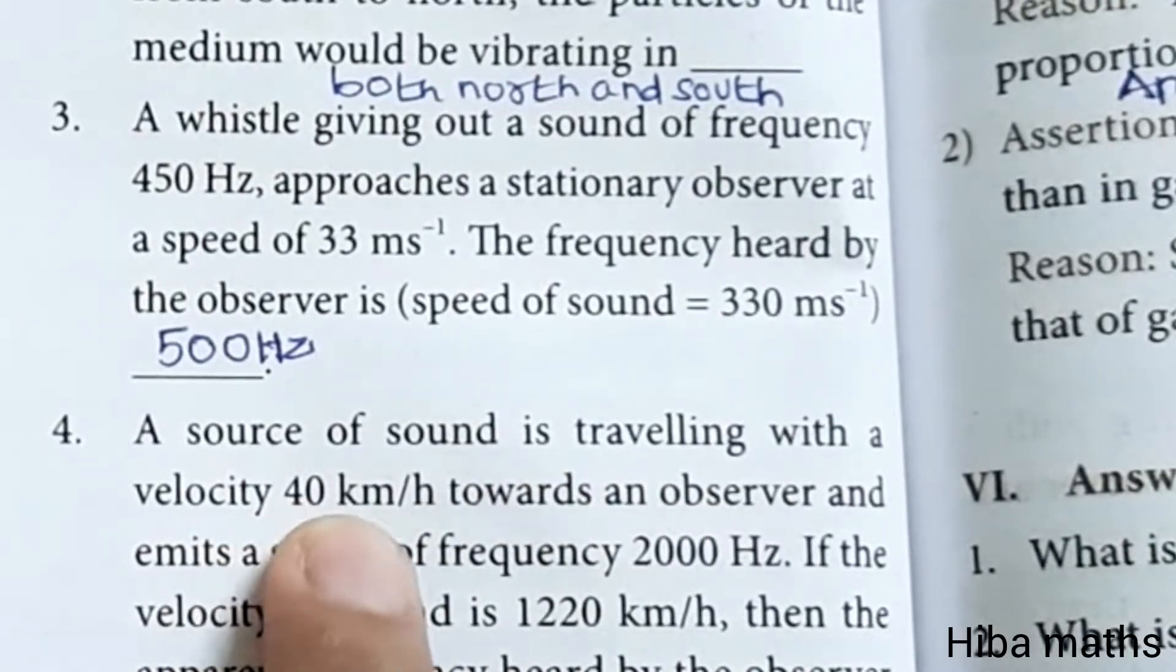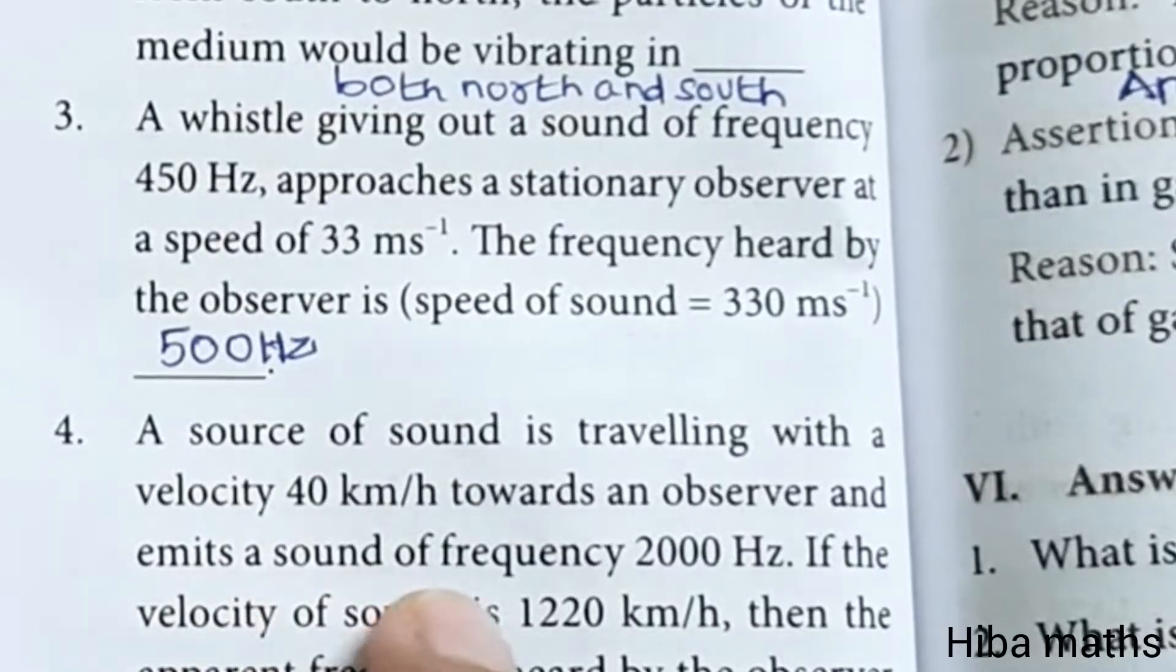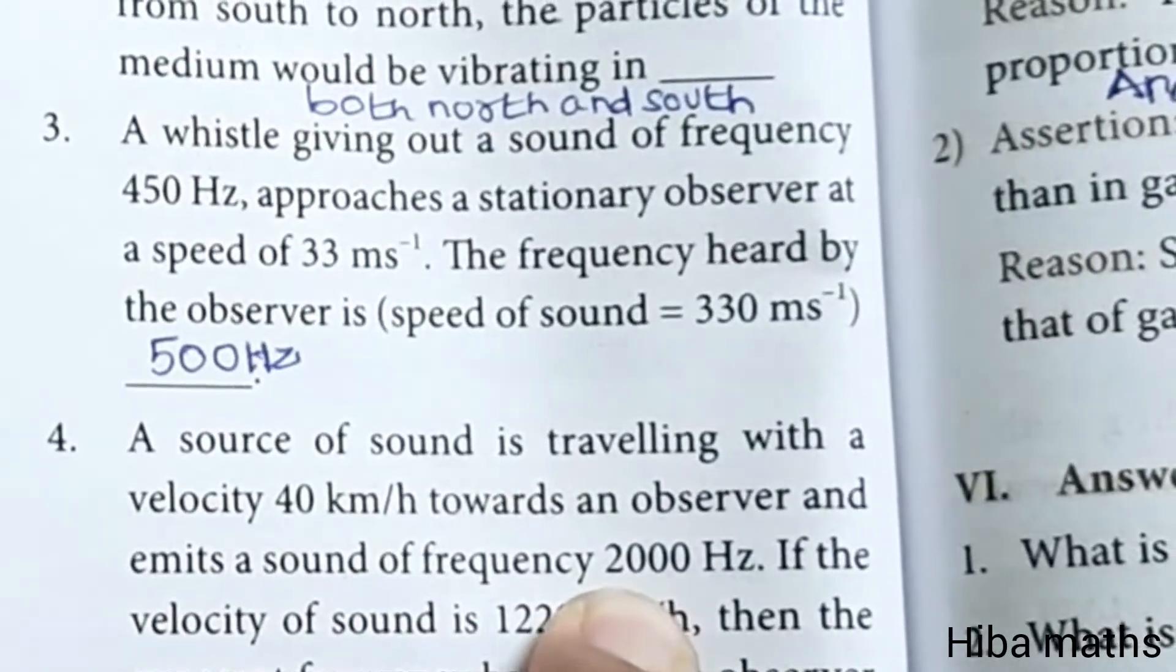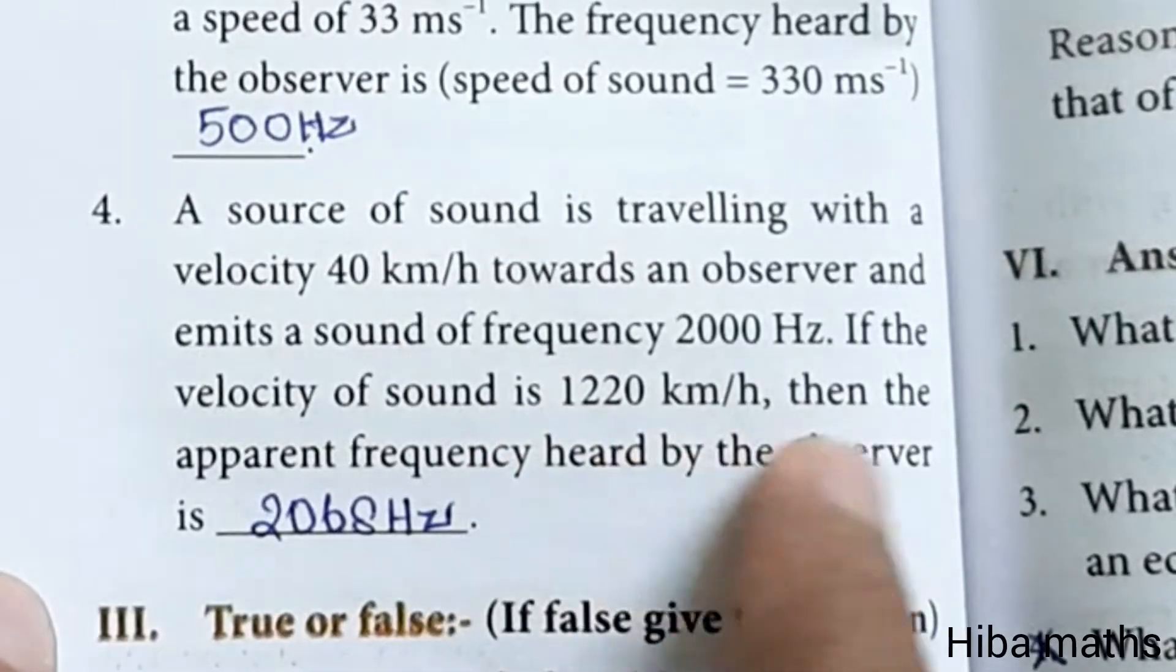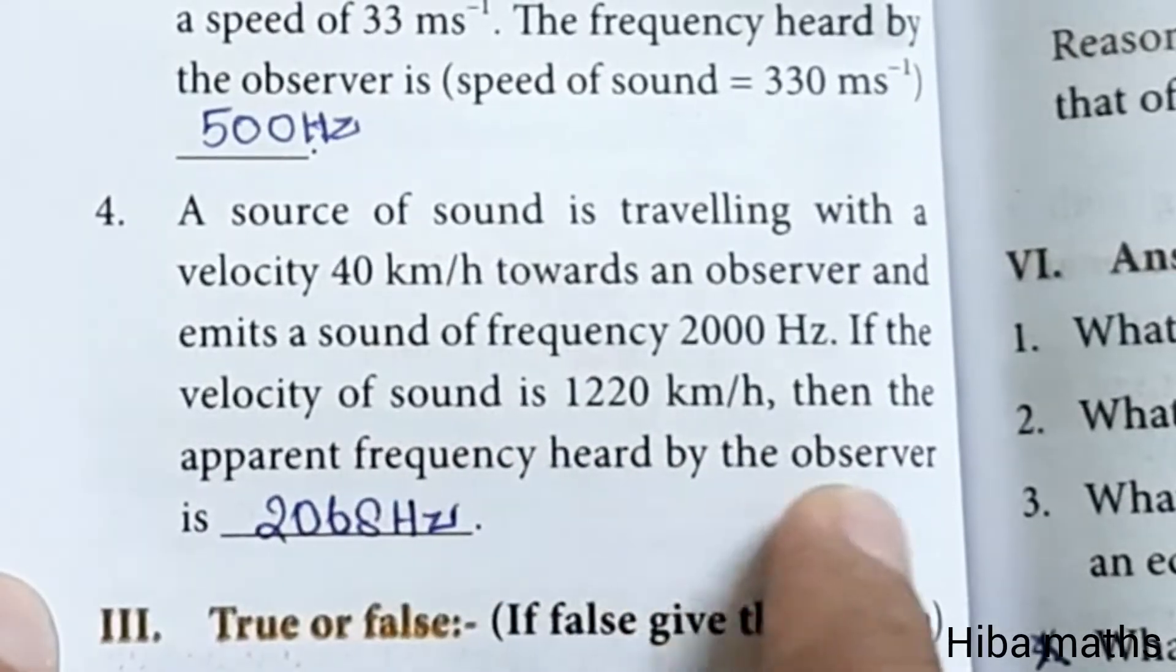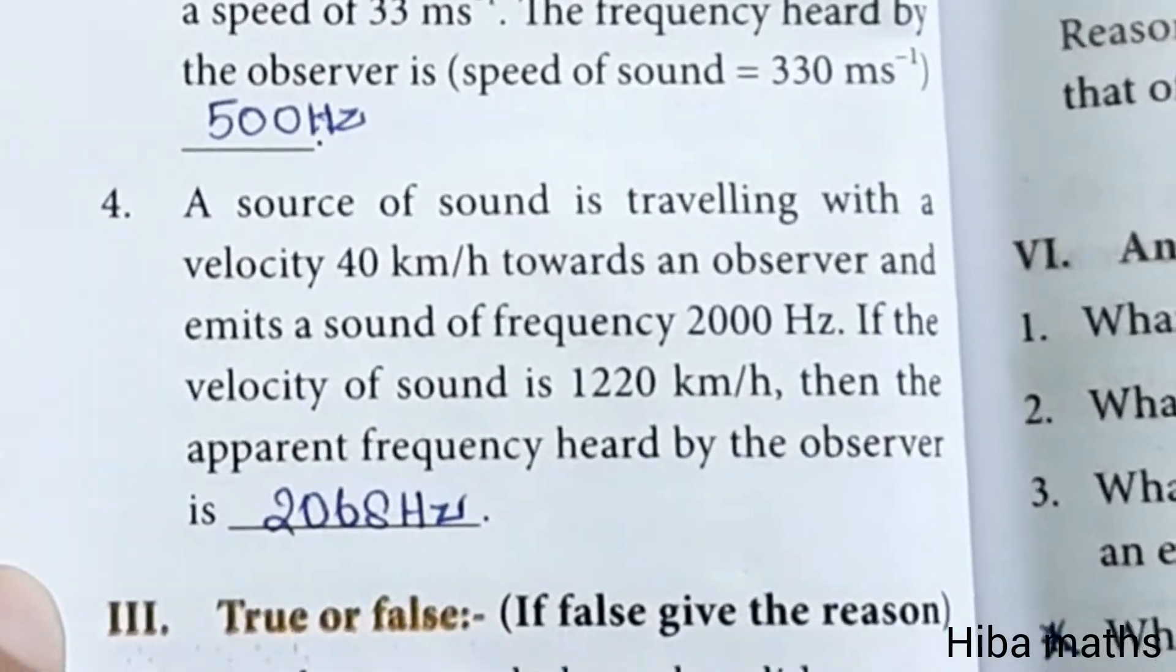A source of sound is traveling with a velocity 40 kilometer per hour towards the observer and emits a sound of frequency 2000 hertz. If the velocity of sound is 1220 kilometer per hour, then the apparent frequency heard by the observer is 2068 hertz.